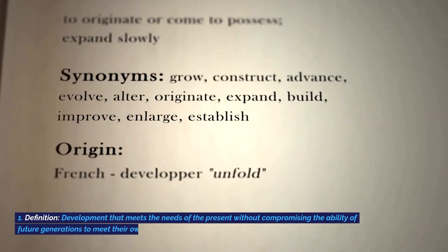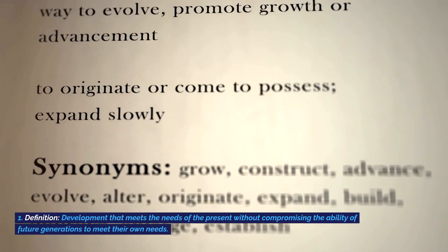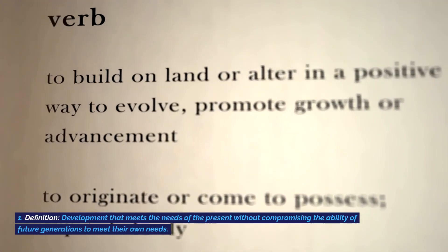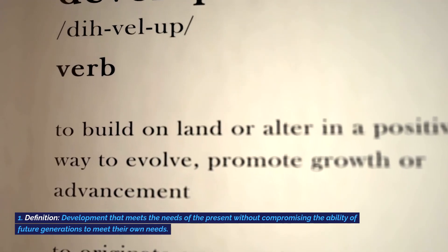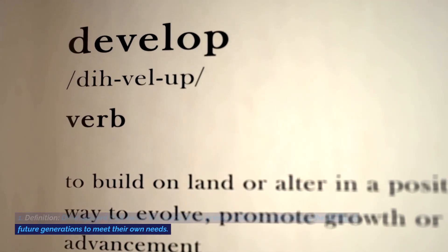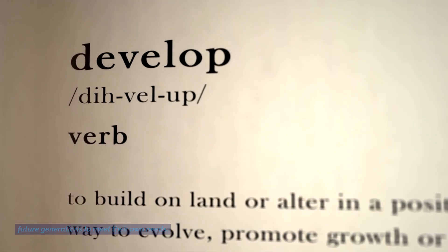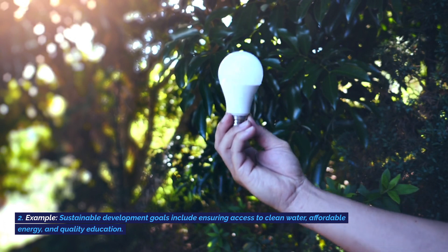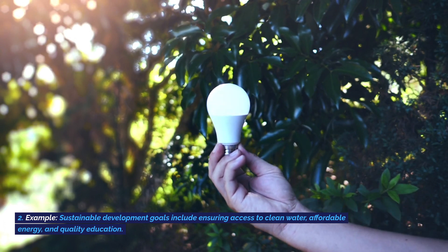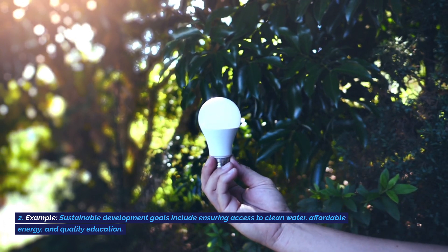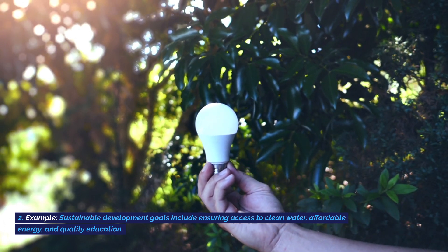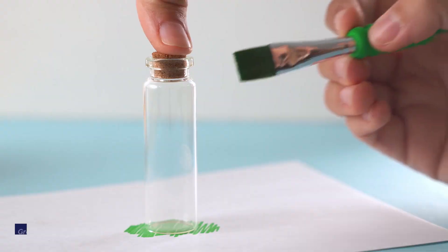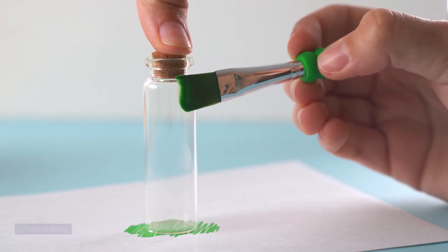Sustainable development: development that meets the needs of the present without compromising the ability of future generations to meet their own needs. Example: Sustainable development goals include ensuring access to clean water, affordable energy, and quality education.